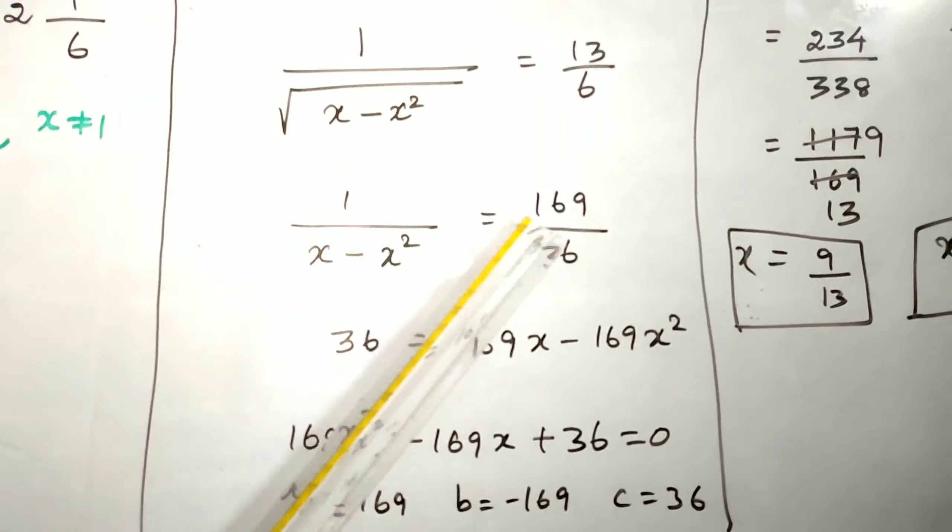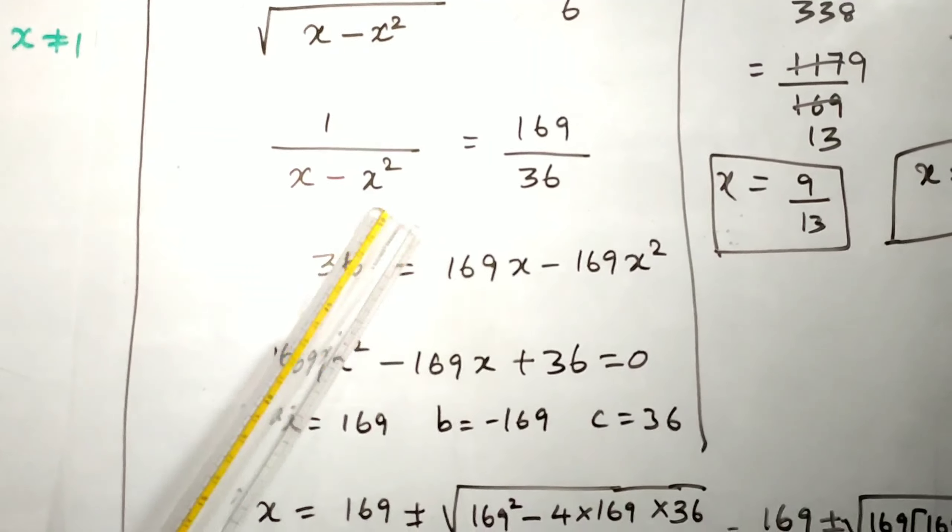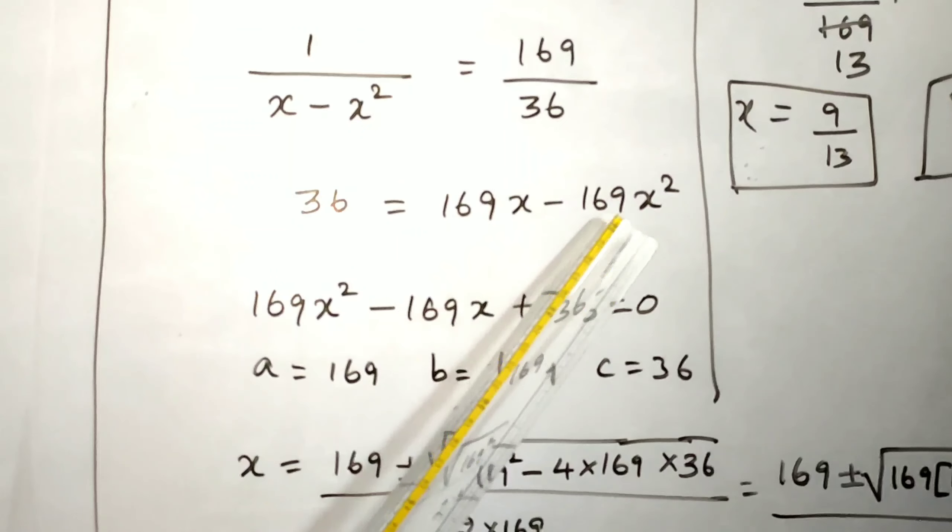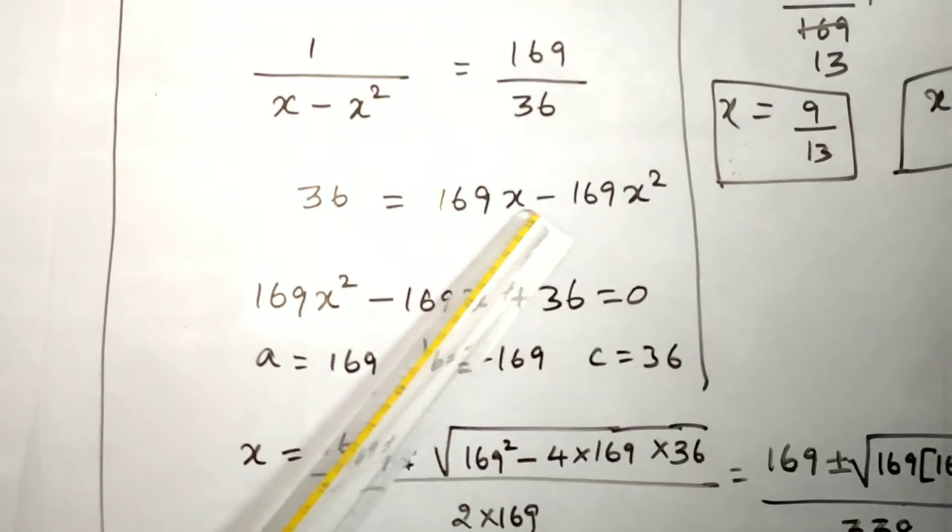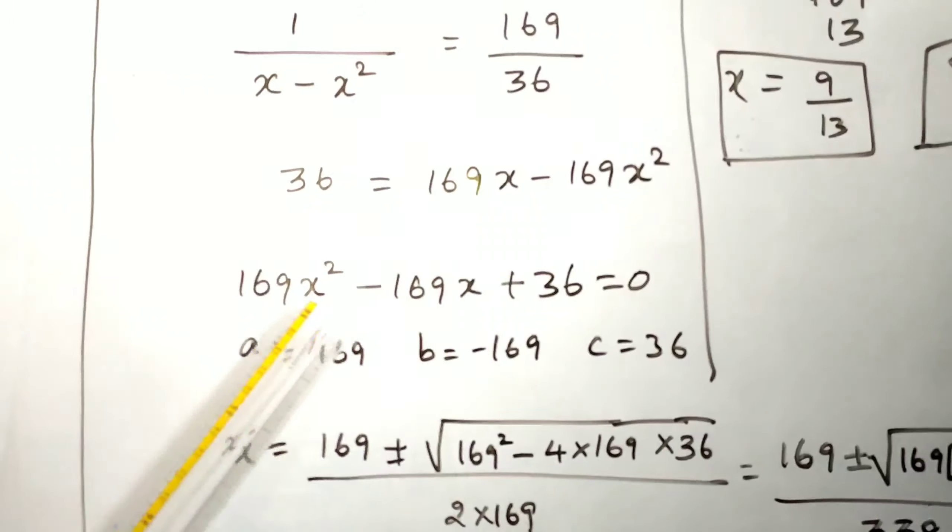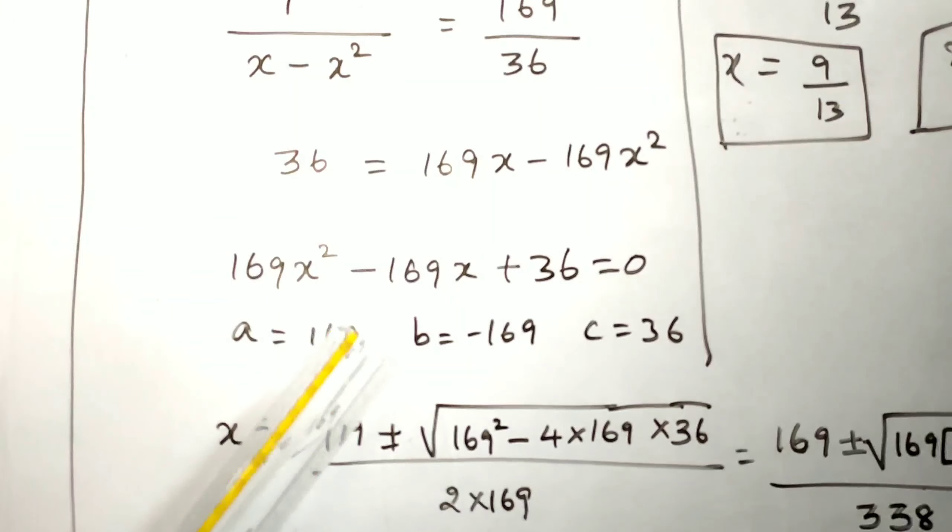Cross multiply. Multiply 36 here and 169 with these two terms: 169x minus 169x squared. The x squared term must be positive, so bring these terms to the left side: 169x squared minus 169x plus 36 equals 0.